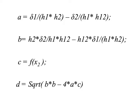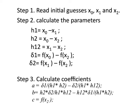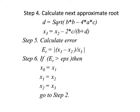The algorithm has step 1: read the initial guess x0, x1, and x2. Calculate the parameters h1, h2, h12, delta1, and delta2. In step 3, calculate coefficients a, b, and c. With these values, calculate d and x3 — the next approximate root. Then calculate the relative error between two consecutive approximate roots. If this error is greater than the allowed error, take the recent three values of x as the new initial approximation and repeat from step 2. Otherwise, print x3 as the approximate root.